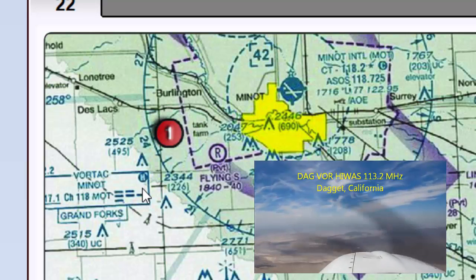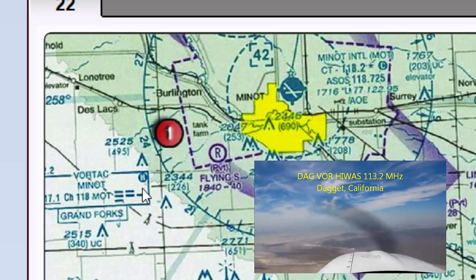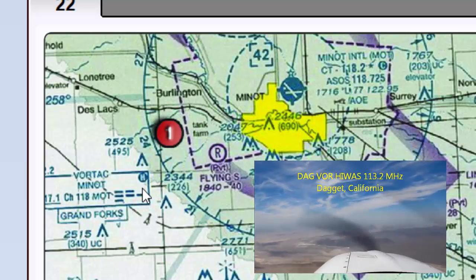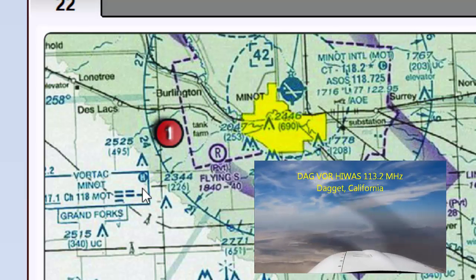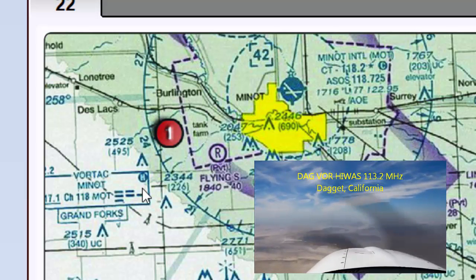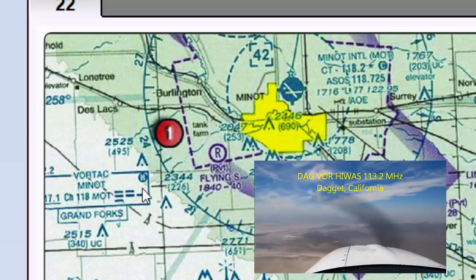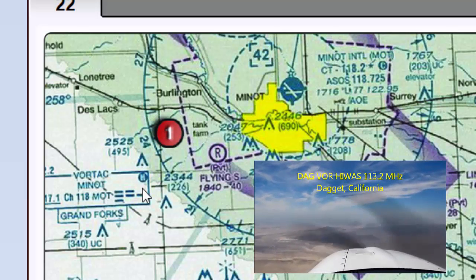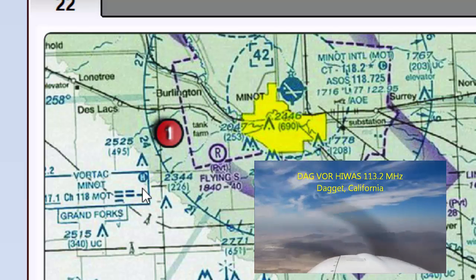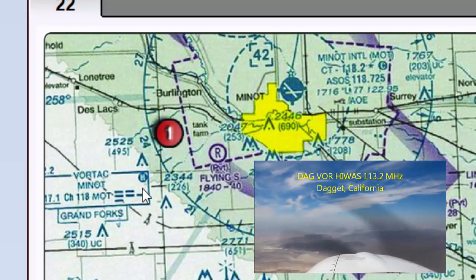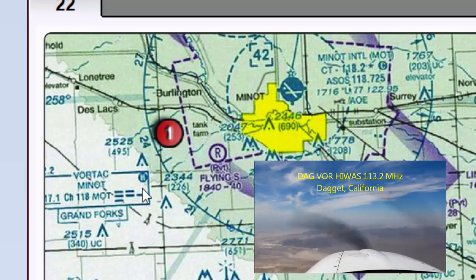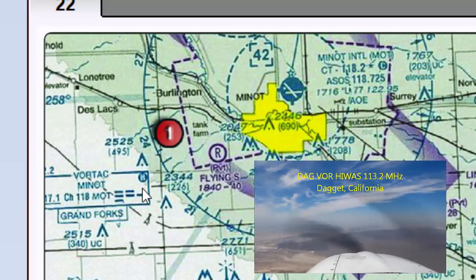Whenever there is a HIWAS in a region, air route traffic control is alleviated from the need to broadcast AIRMETs and SIGMETs. What they will do is whenever there's a HIWAS update, they'll make an announcement saying something like, 'Attention all aircraft, hazardous weather information is available on HIWAS, flight watch, or flight service frequencies.'